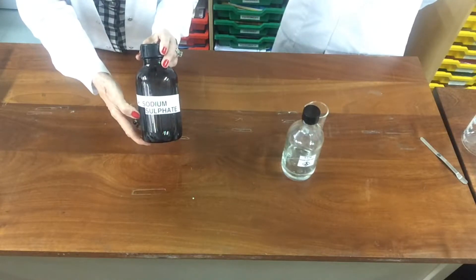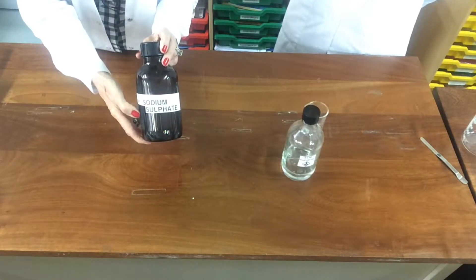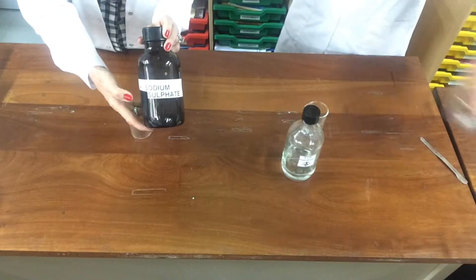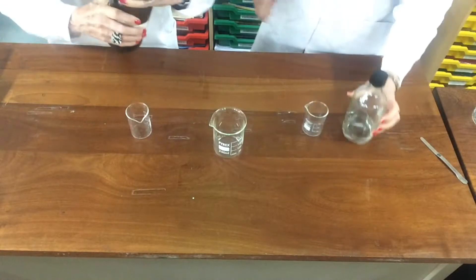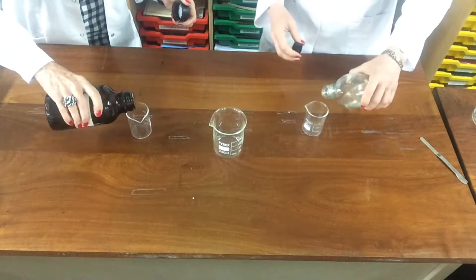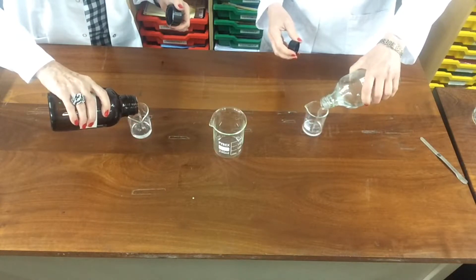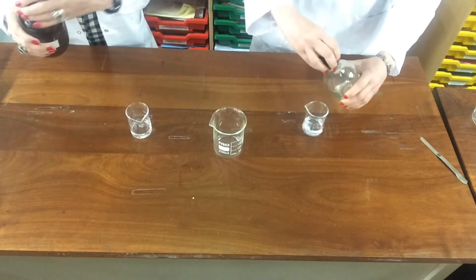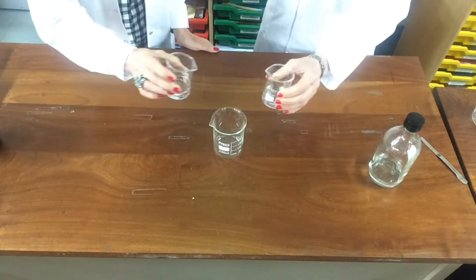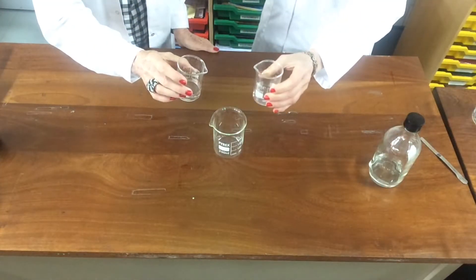So what we'll do is we'll use a small volume of both of the solutions and then we're going to add them together. So let's pour out approximately 25ml. Right. One, two, three, abracadabra.